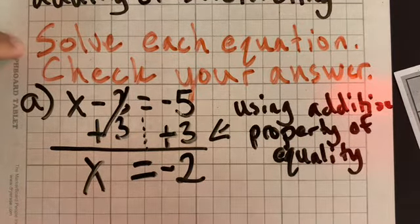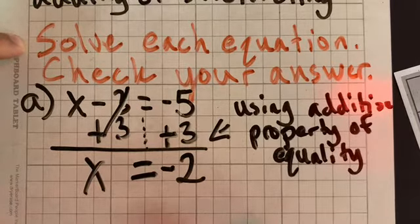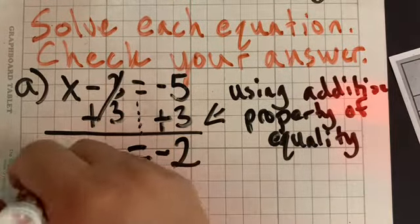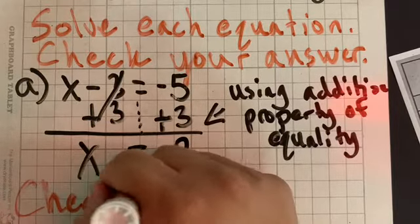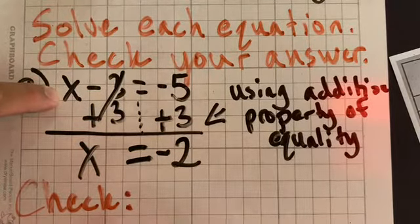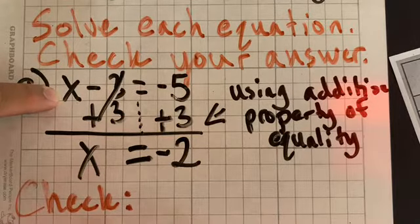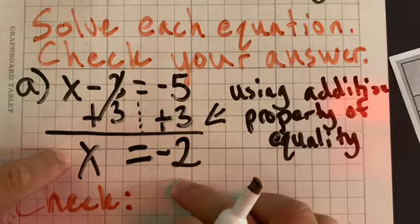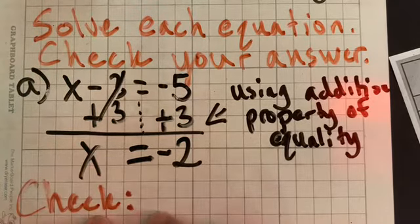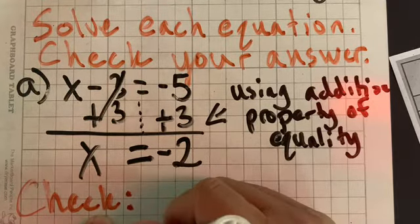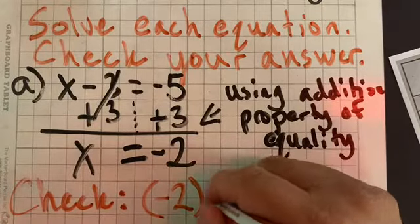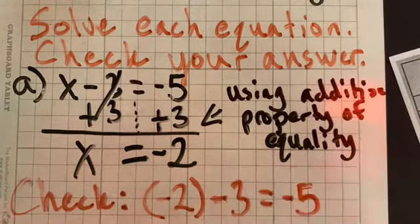So we did the first part. We did solve each equation. Now what we're going to do is we're going to check our answer. We want to make sure, are we correct? This is how you're going to check your work. You're going to take the original problem. In this case, X minus 3 equals negative 5. But it goes back to when we did evaluating expressions. We now know that X is equal to negative 2. So I'm going to go to wherever X is. I'm going to replace it with negative 2.